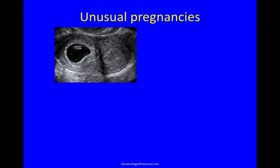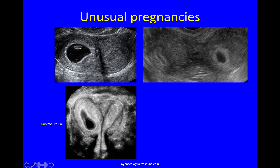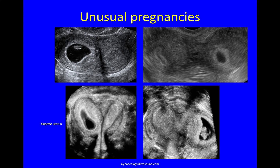Sometimes pregnancies are unusual. In this case there is a pregnancy in one horn and an empty uterine cavity on the other side, and on 3D it was instantly obvious that this is a septate uterus with the pregnancy in one horn and an empty endometrial cavity on the other side. That is very different from this case where the pregnancy is on one side and a bit of endometrial cavity is empty — on 3D this is clearly a unicornuate uterus with a pregnancy in the rudimentary horn. It is very important to be able to tell these two apart.